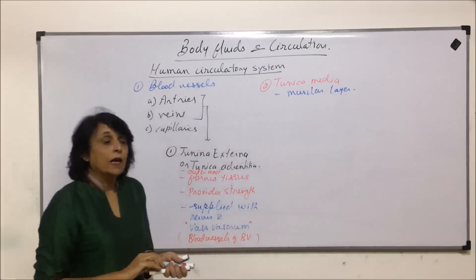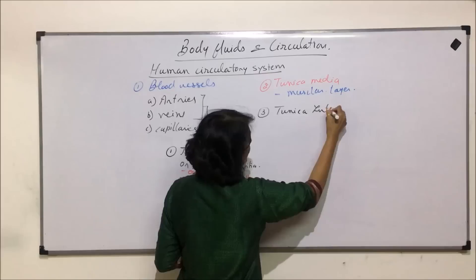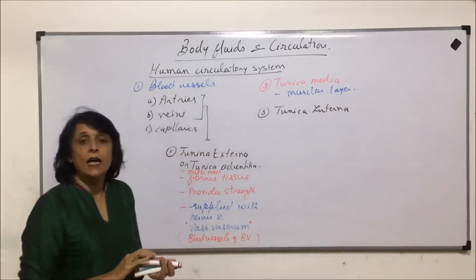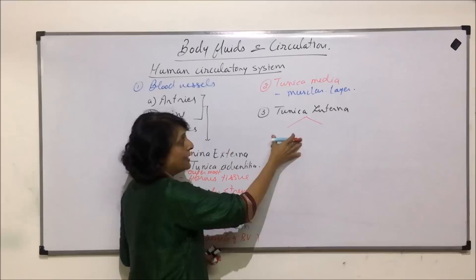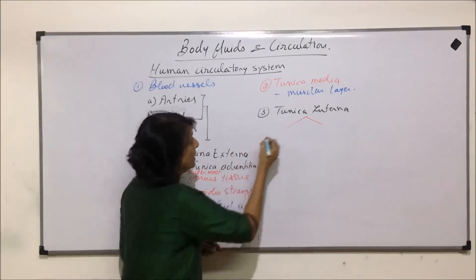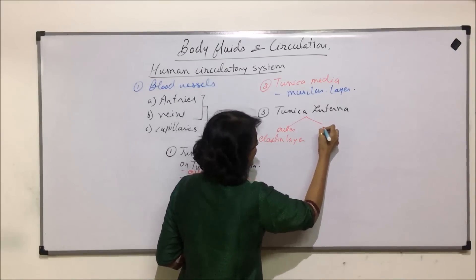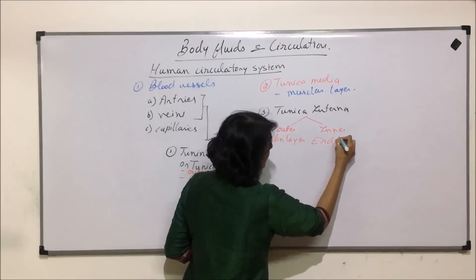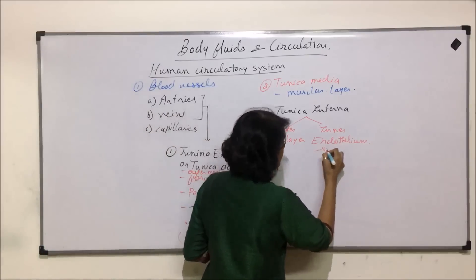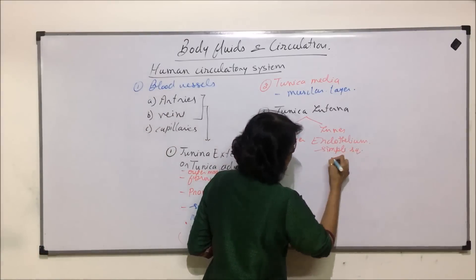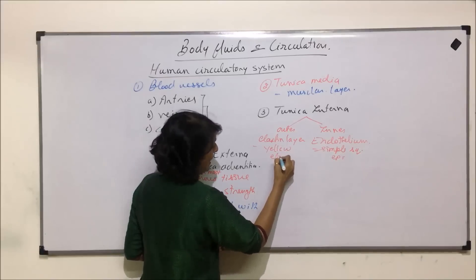The second layer is called tunica media, and as the outermost layer provides strength, tunica media is made up of muscular fibers — we can call it the muscular layer. The innermost is called tunica interna, and this tunica interna is divided into two layers. The outer of these two is the elastic layer or elastin layer, and the inner is endothelium. Endothelium is simple squamous epithelium and the elastin layer is made up of yellow elastin fibers.